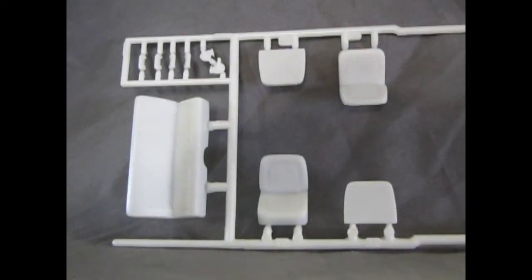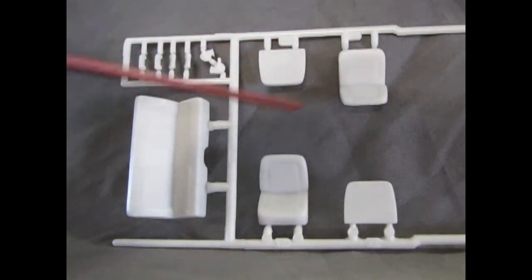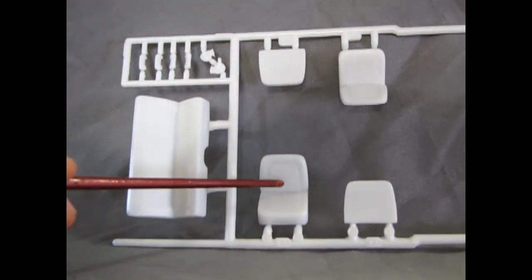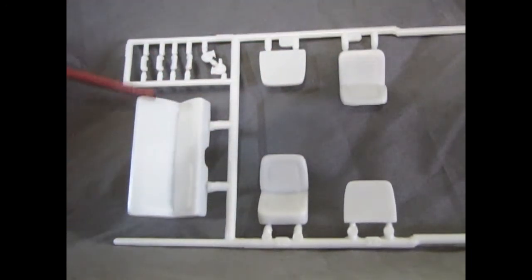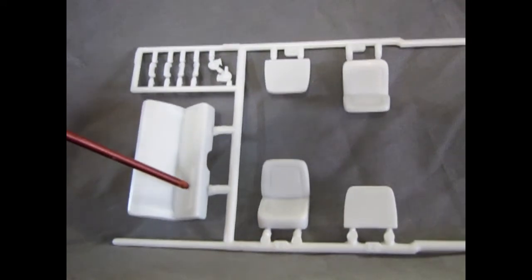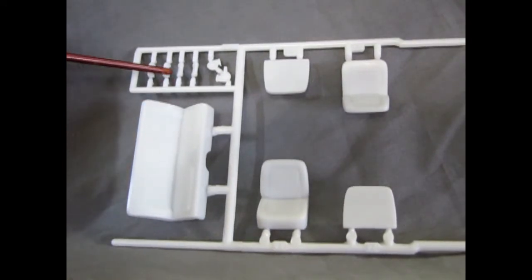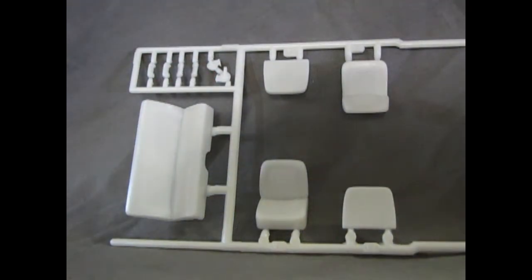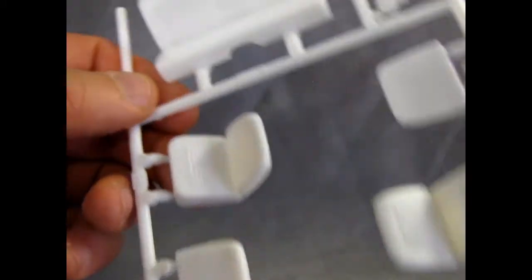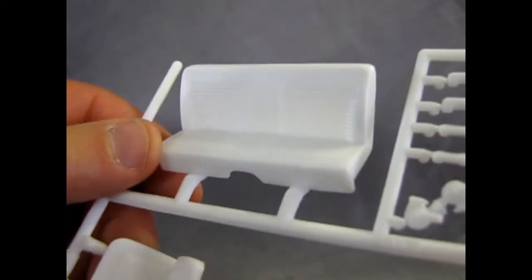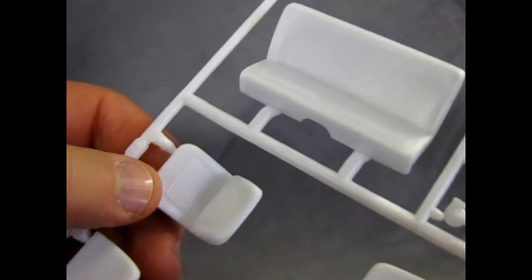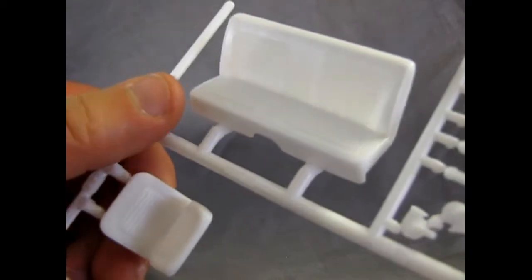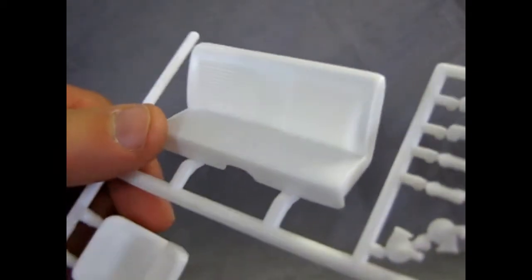So the next parts tree here includes the front bucket seats. Some nice detail on those. And our rear bench seat with a similar tuck and roll on there. And then we have our armrests up here and the two horns for the radiator wall. And then this has got a big blank space, which is reminiscent of the Johan Chrysler Turbine kit from 63 that I have featured in this YouTube channel somewhere. But yeah, I mean, look at the nice detail on those seats.